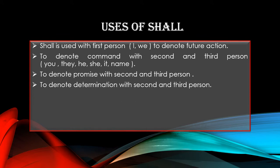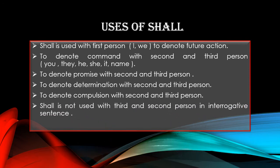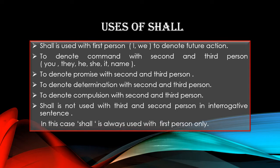Shall is also used with second and third person to denote determination and compulsion. Shall is not used with second and third person in interrogative sentences — in that case, shall is always used with first person only. So to express command, promise, determination, and compulsion, we use shall with second and third person, but in interrogative sentences we use it only with first person.